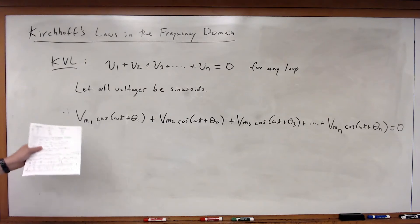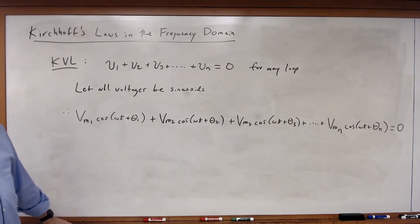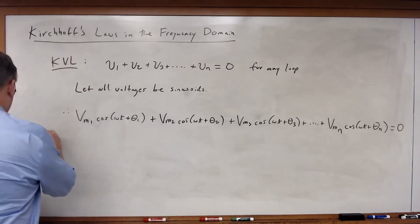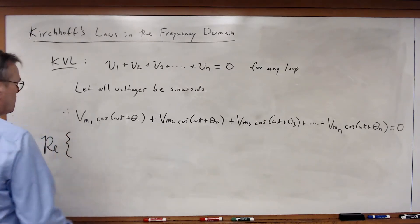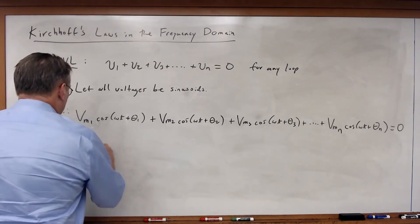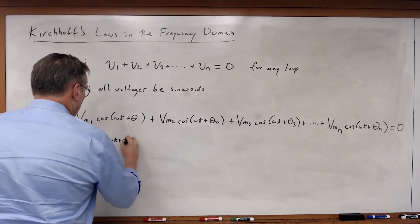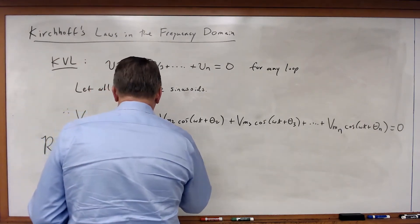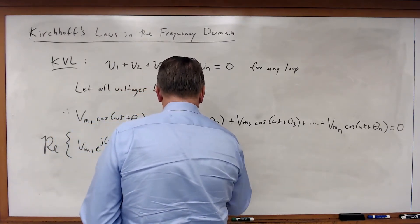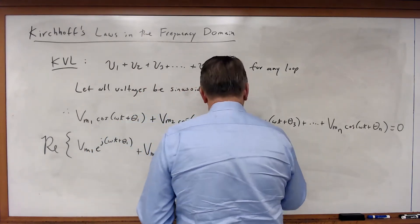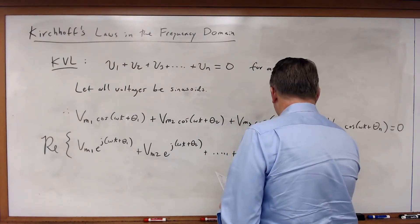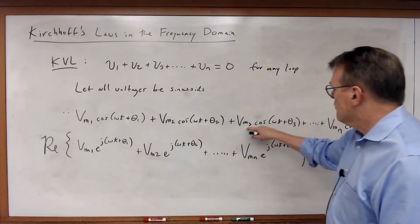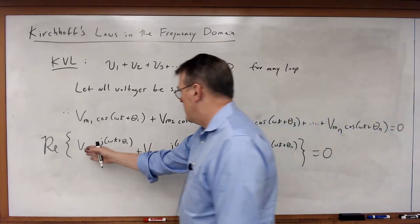Now we have everything in sinusoid form. But each of these sinusoids — these cosine terms — is really nothing more than the real portion of a complex number. In other words, I can rewrite this and say that this must be true. If I write this in exponential form: Vm1 times e to the j omega t plus theta 1, plus Vm2 e to the j omega t plus theta sub 2, all the way to Vm sub n e to the j omega t plus theta sub n, equals zero. These are just the real terms of complex numbers, written using Euler's identity.